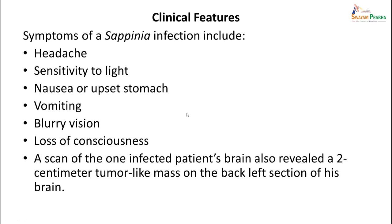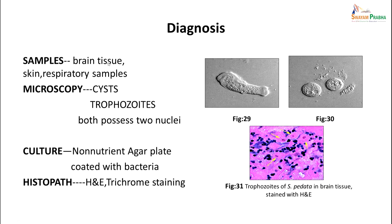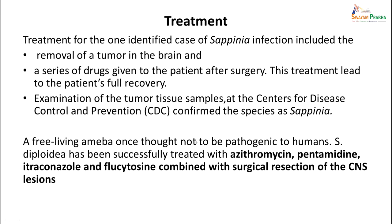Symptoms include headache, sensitivity to light, nausea, vomiting, blurry vision, and loss of consciousness. A scan might reveal a tumour-like mass in the brain. For diagnosis, brain tissue, skin, or respiratory samples are used to demonstrate cysts and trophozoites, both of which possess two nuclei. They can be grown in non-nutrient agar plates coated with bacteria such as E. coli, similar to Naegleria, and the next day the organism will have eaten away some of the culture - trophozoites can be seen there. Trophozoites can also be seen in brain tissue or other sites by histopathological staining. For treatment, in the identified case, the tumour in the brain was removed surgically and a series of drugs were given after surgery, leading to full recovery. Examination of the tumour tissue at CDC confirmed the species as Sappinia. Treatment can include azithromycin, pentamidine, itraconazole, and flucytosine combined with surgical resection if needed.